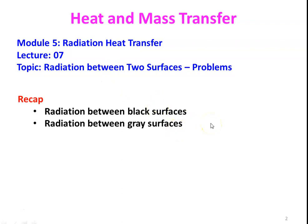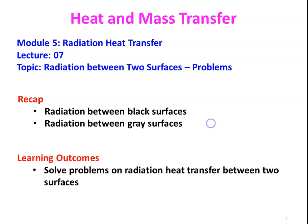In the previous lecture, we discussed the radiation between black surfaces and derived the equation for calculating radiation heat transfer between black surfaces. Similarly, we derived the equation for radiation heat transfer between gray surfaces. In this lecture, we are going to solve problems. At the end of this lecture, you will be able to solve problems on radiation heat transfer between two surfaces on your own.